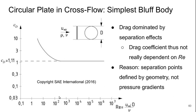Once we hit a Reynolds number of a few hundred, which is still very low, the drag coefficient becomes completely constant at 1.11. And the reason is that the separation points are defined by the geometry, not by the pressure gradients, because there's these sharp edges and the flow is pretty much always going to separate there.